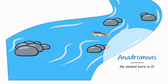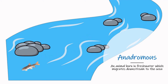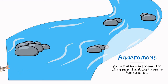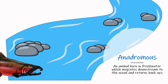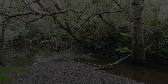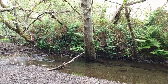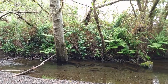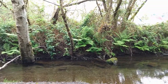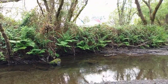Coho salmon are anadromous, which means they're born in the stream, and as they grow, they migrate downstream into the ocean. A few years later, they return to their home stream so that they can complete their life cycle and spawn before they die. As anadromous fish, coho salmon spend a significant part of their life moving from place to place, which means they need to use different types of habitat at different parts of their lives.